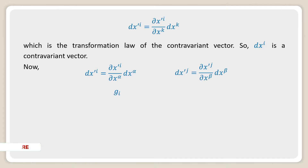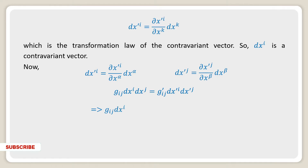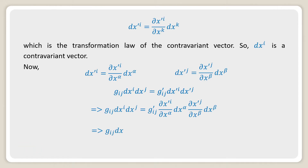So dx^i is a contravariant vector. Now dx'^i = (∂x'^i/∂x^α)dx^α. Again dx'^j = (∂x'^j/∂x^β)dx^β.